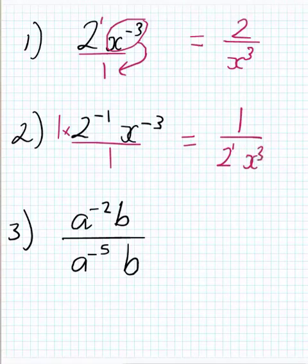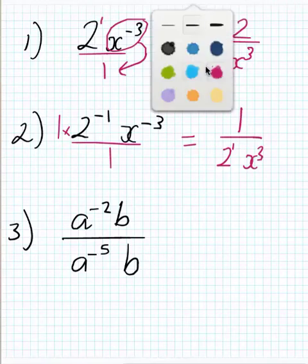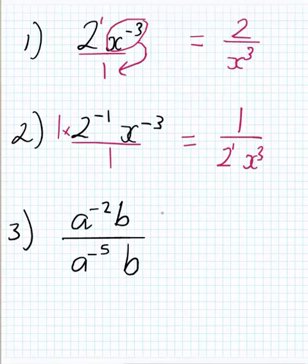With this problem, identify what's negative in powers and what's positive. I can clearly see I've got a to the power of negative 2 and a to the power of negative 5 — these two have to move.